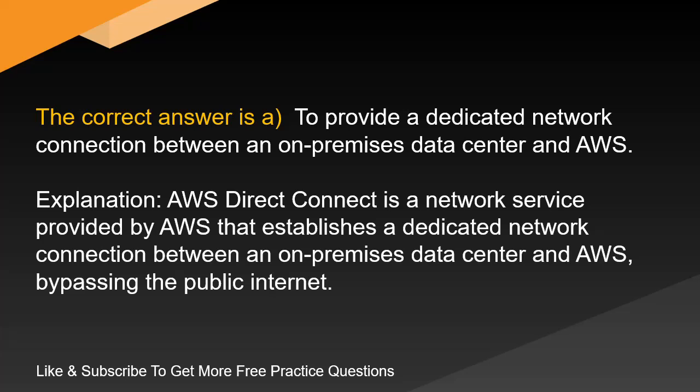Explanation. AWS Direct Connect is a network service provided by AWS that establishes a dedicated network connection between an on-premises data center and AWS, bypassing the public internet.